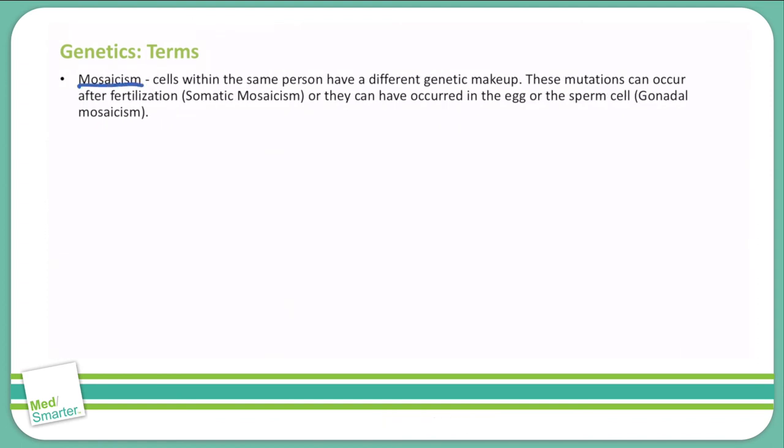Mosaicism is where cells within the same person have a different genetic makeup. This is due to mutations that can happen either after fertilization or prior to fertilization in the individual egg or sperm cell. If they occur after fertilization, that's called somatic mosaicism. If they are in the egg or sperm cell, that's called gonadal mosaicism.